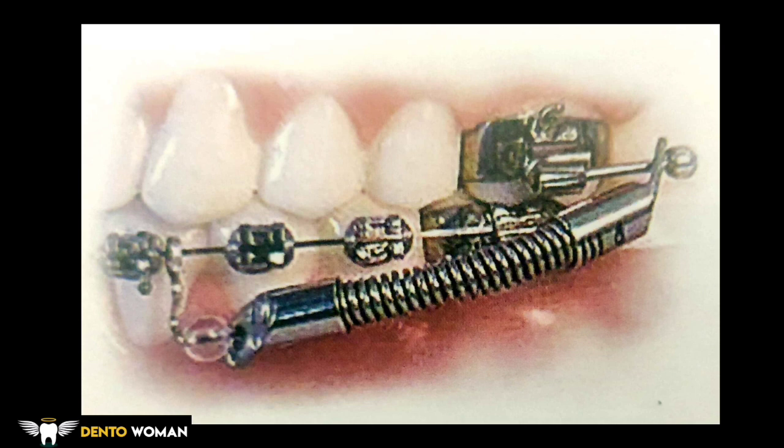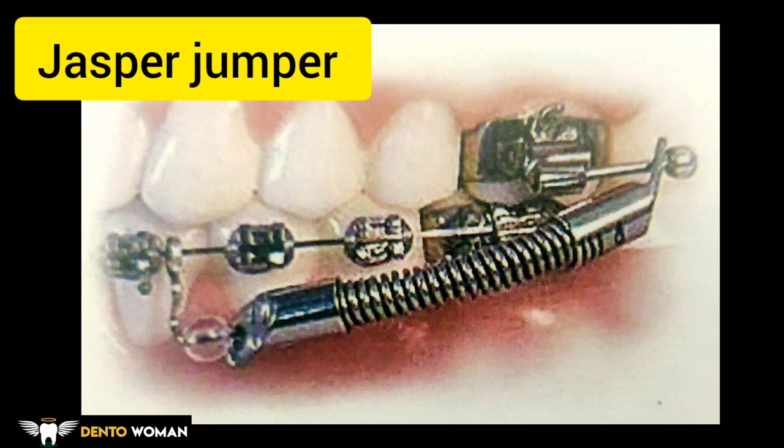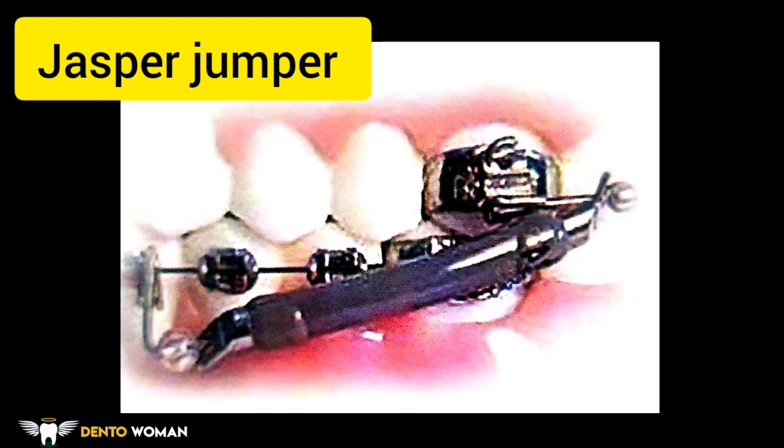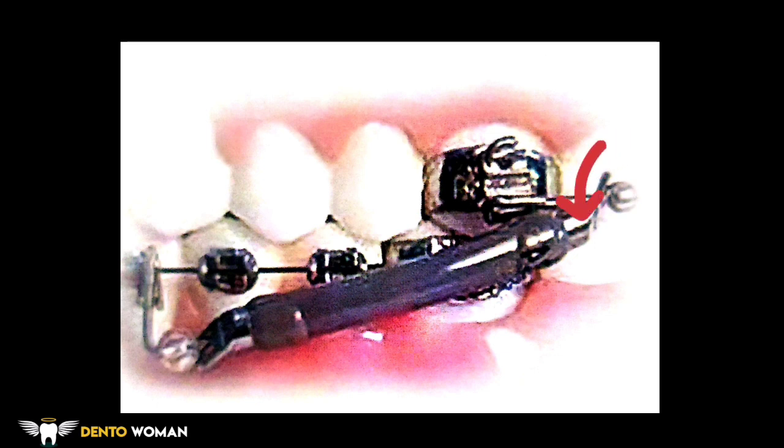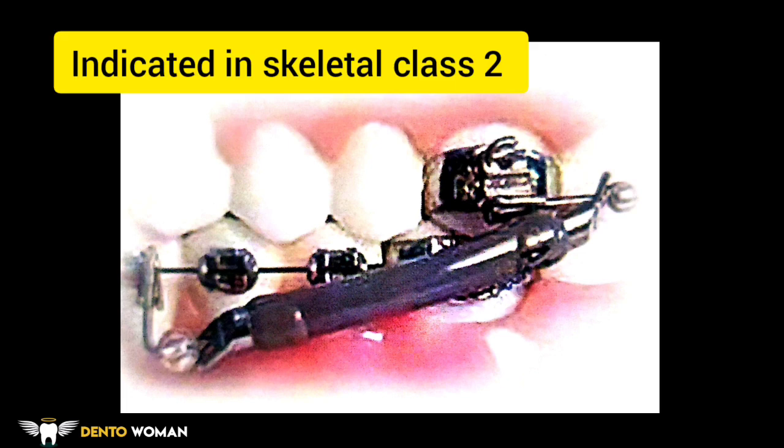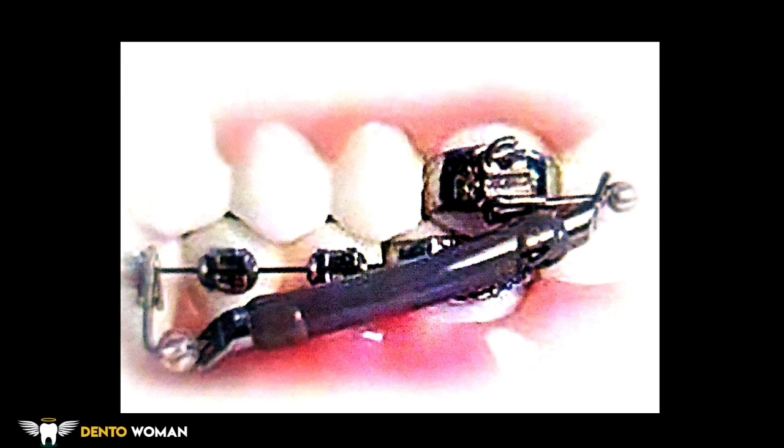This image resembles the Herbst appliance but it is the Jasper Jumper. The Jasper Jumper is a flexible open coil spring with polyurethane covering. The end caps are attached to the fixed appliance at the maxillary posterior by a ball pin that passes through the face bow tube of the maxillary first molar. In the mandibular anterior region, the module is attached to the lower arch wire distal to the mandibular canine by a small bayonet bend and a lexan bead. It is indicated in skeletal class 2 malocclusion with maxillary excess and mandibular deficiency, and brings about both skeletal and dentoalveolar changes in a ratio of 40 to 60.